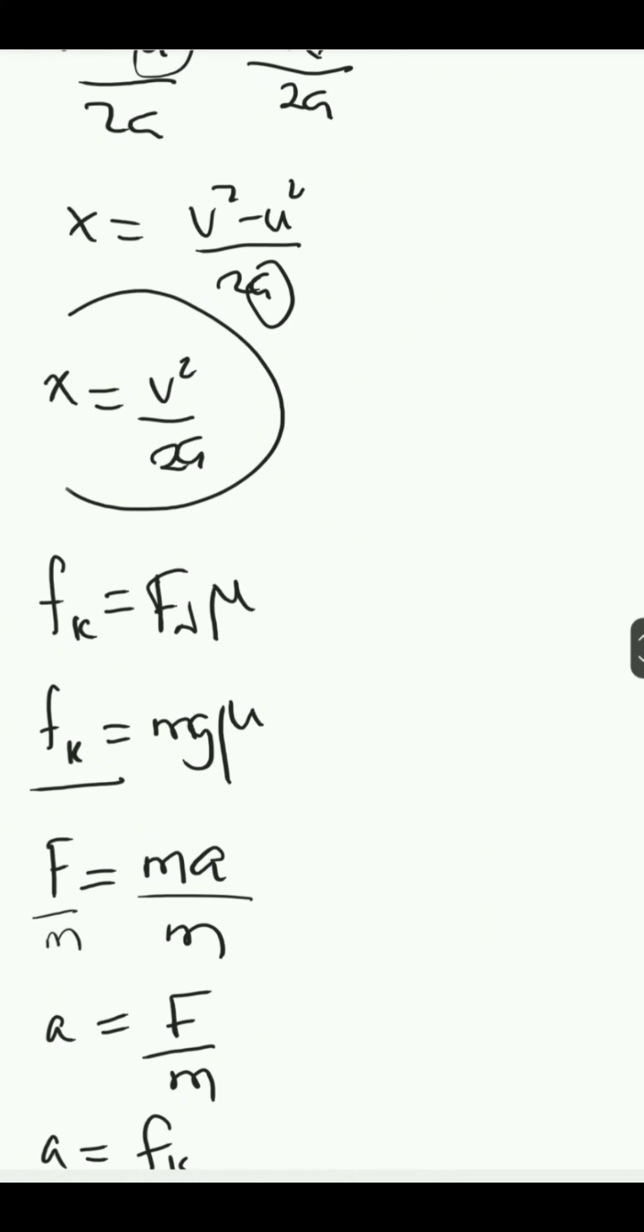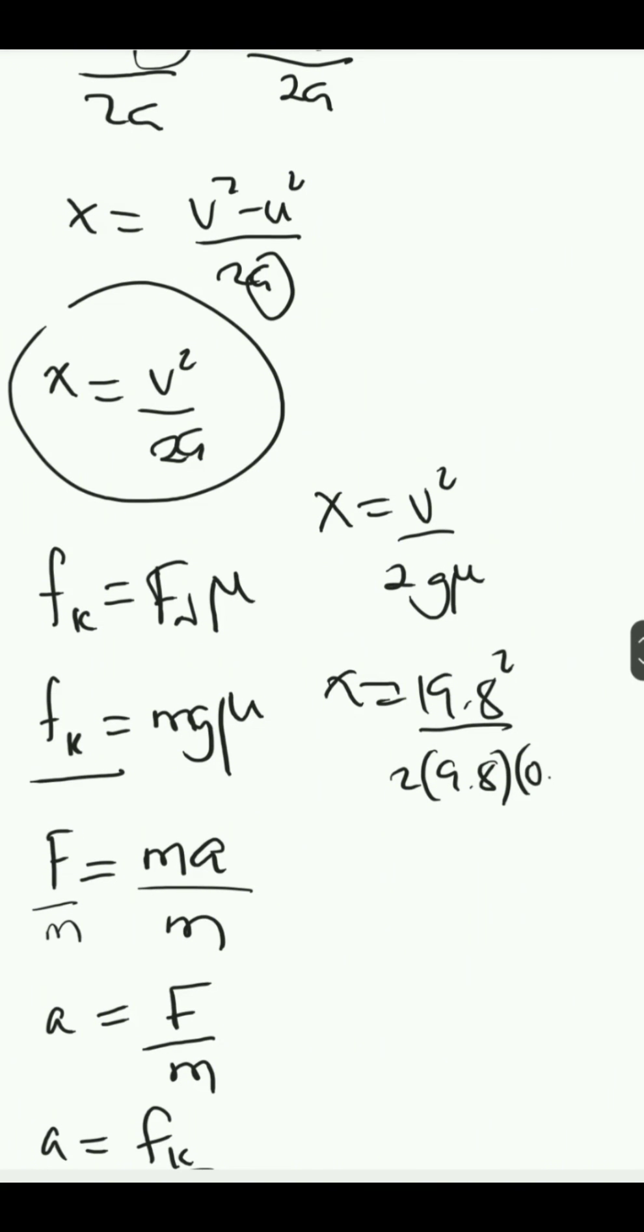Now let's go back to the formula for displacement or distance. So we have x to be equal to v squared over 2a, over 2g mu. That is for a. So x is equal to v squared, which is 19.8 squared divided by 2 times 9.8 times 0.210.